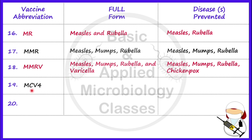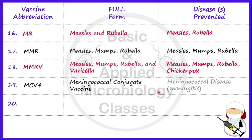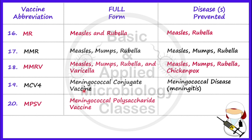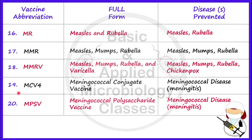The next vaccine is MCV4. The full form of MCV4 is Meningococcal Conjugate Vaccine, and it is used to prevent meningococcal disease, or meningitis, caused by Neisseria meningitidis, a bacterial causal agent. Next is MPSV, which stands for Meningococcal Polysaccharide Vaccine, also used for meningitis. The route of administration for all these vaccines is subcutaneous, except for MCV4, which is given by intramuscular route.